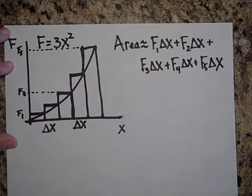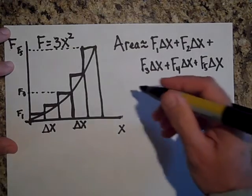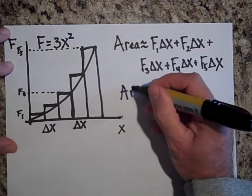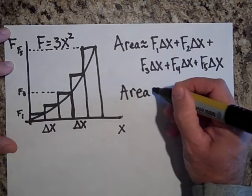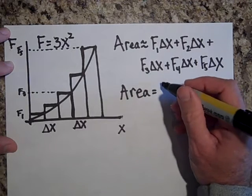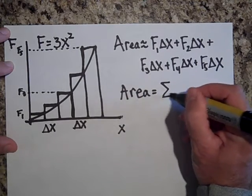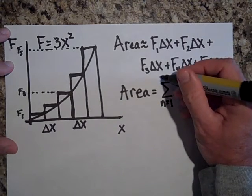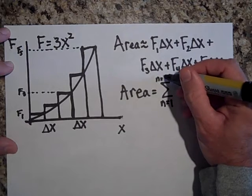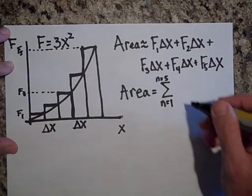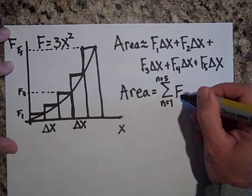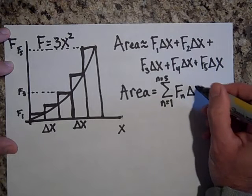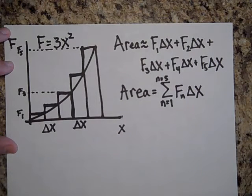That can be tedious to write, and so what we do is we have a shortcut method of saying the area is equal to the sum from the first rectangle n equals one to the fifth rectangle n equals five of F sub n times delta x.